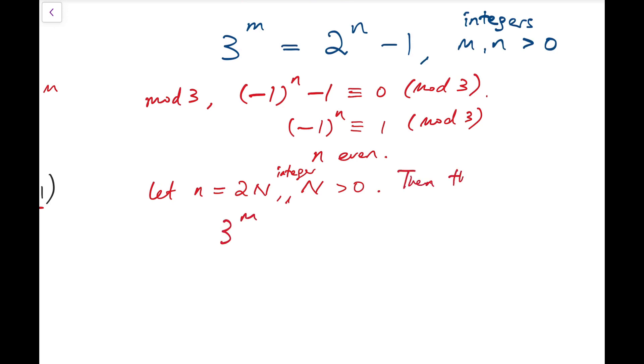So 3 to the power of m equals 2 to the power 2 times big N minus 1. Notice that the right-hand side is the difference of 2 squares.